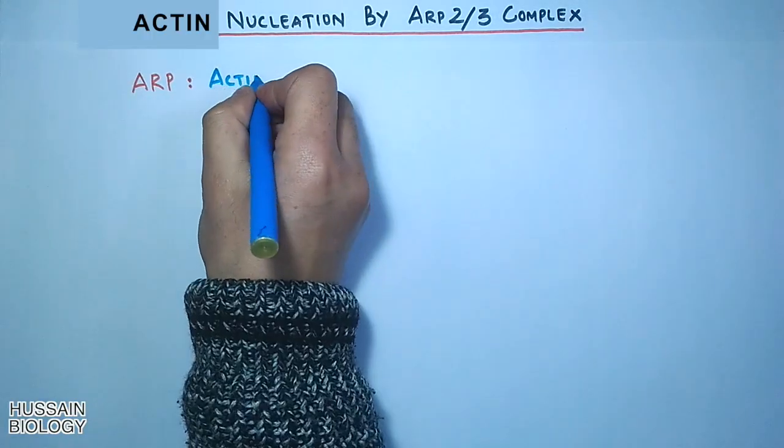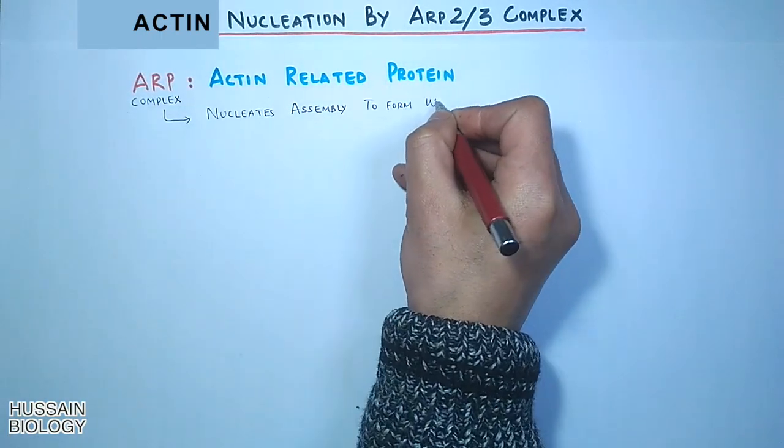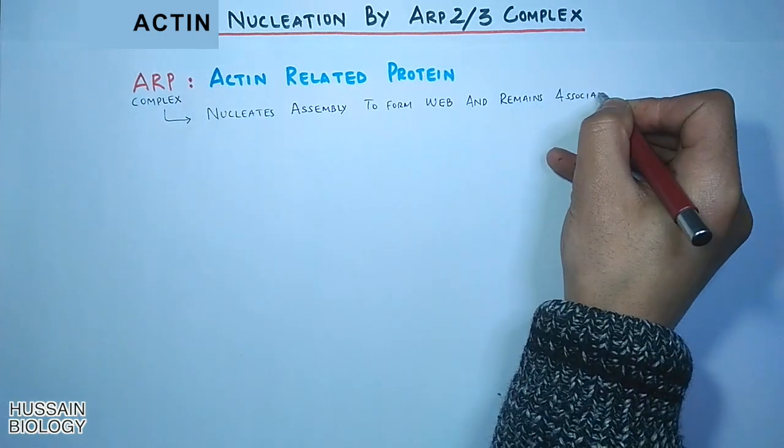ARP is the actin-related protein. An ARP complex nucleates assembly to form web-like structure and remains associated with the minus-end.